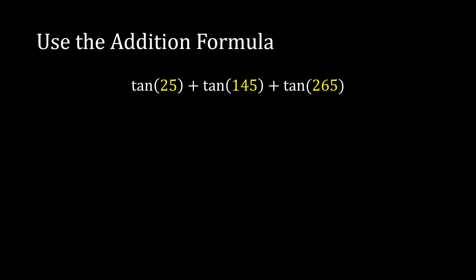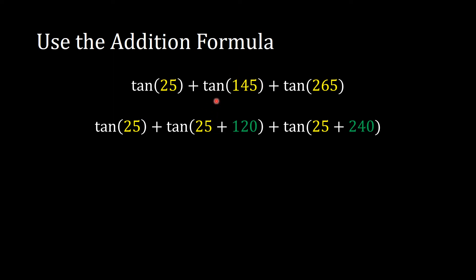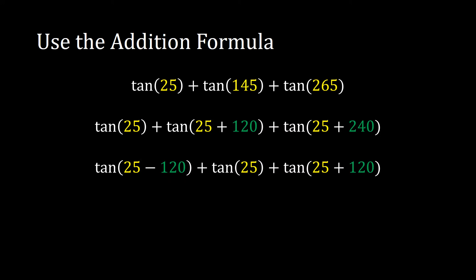Now we're going to actually evaluate this. We'll bring back the addition formula and express everything in terms of tangent of 25 degrees. We know 145 is just 25 plus 120, and 265 is 25 plus 240. To simplify further, I'm going to rewrite tangent of 25 plus 240 as tangent of 25 minus 120, because negative 120 and 240 are the same angle — they land in the same place on the unit circle, just 360 degrees apart.